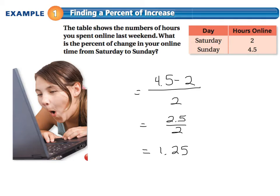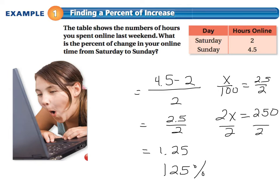Now obviously that's going to be a decimal, but we have to change that to a percent, which gives me a 125% increase. Now if you did write that as a proportion, you could do this. What percent is X out of 100 equals two and a half out of two? You could have cross-multiplied and got 2X equals 250. Divided both sides by two, which would have given you the same answer as 125%.